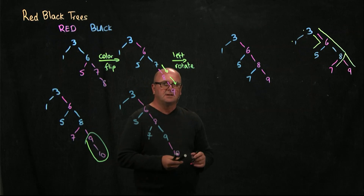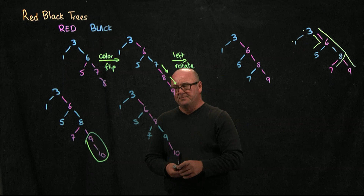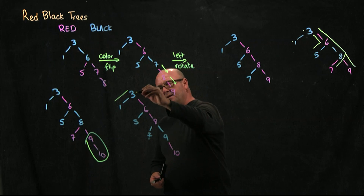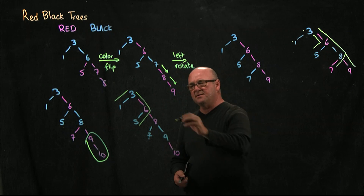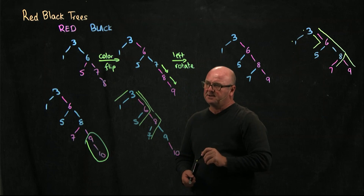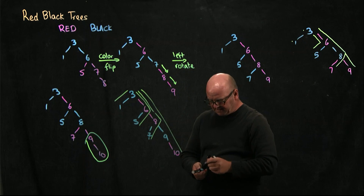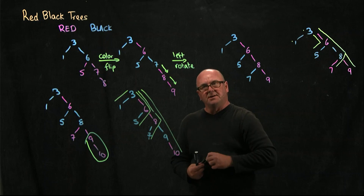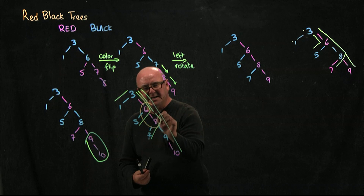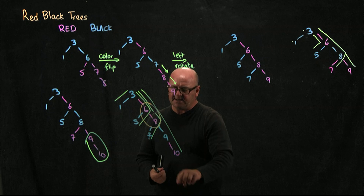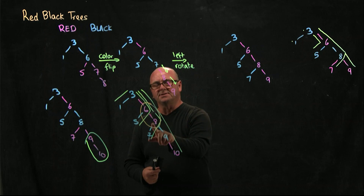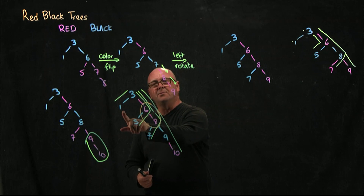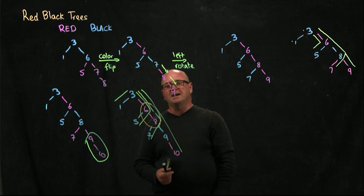Is that a valid red-black tree? Every path must have the same number of black nodes — we've got two black nodes going down each path. But it's not a valid red-black tree because we've got two consecutive reds. How do we fix it? The 8 is the problem child. The 6 is the parent, the 3 is the grandparent, and the 1 is the aunt. It's a black aunt, so we rotate.